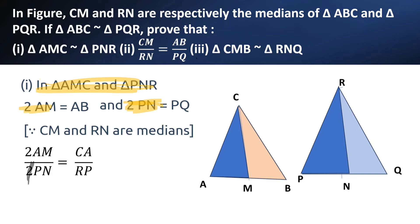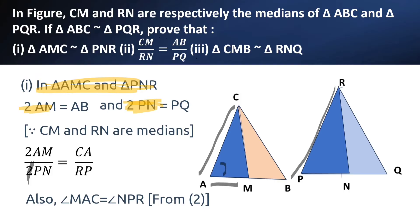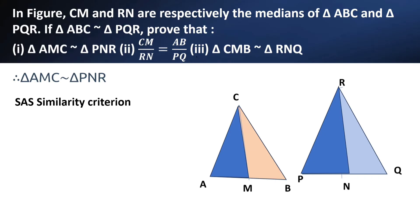Now, AM and PN are corresponding sides, and CA and RP are also corresponding sides — they are in the same ratio. Also, we know that angle A is equal to angle P from equation 2. Angle MAC is equal to angle NPR. So triangle AMC is similar to triangle PNR because of SAS similarity criterion.